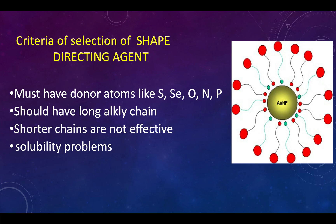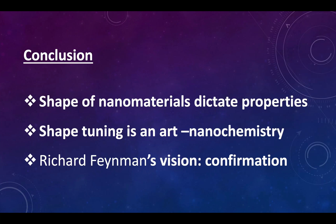So these are the basic criteria. Molecules containing sulfur, selenium, oxygen, nitrogen, and phosphorus with long chains are used as shape-directing agents. In conclusion, the shape along with the size of the nanomaterial actually dictates its properties, and shape tuning is an art in the domain of nanochemistry.